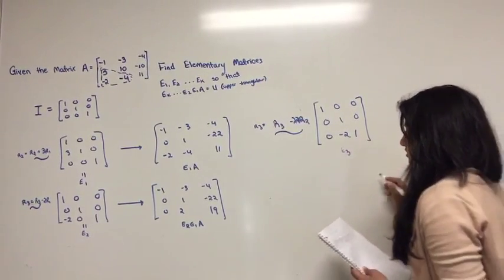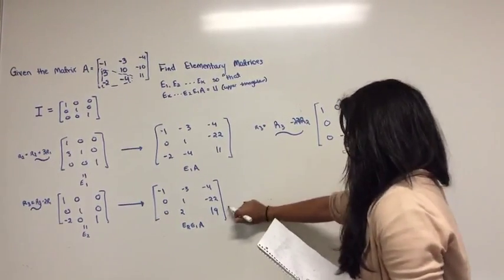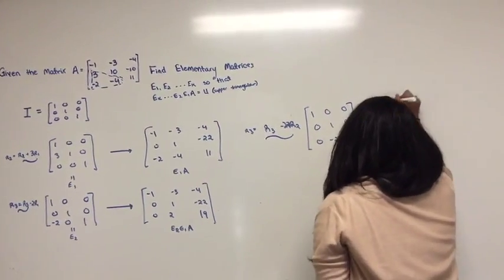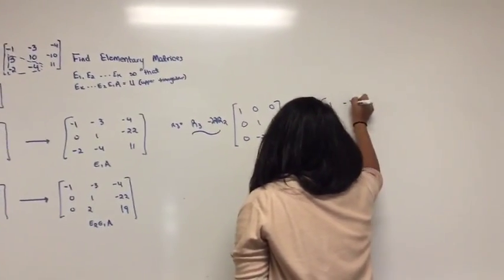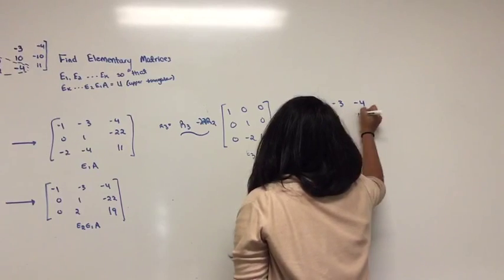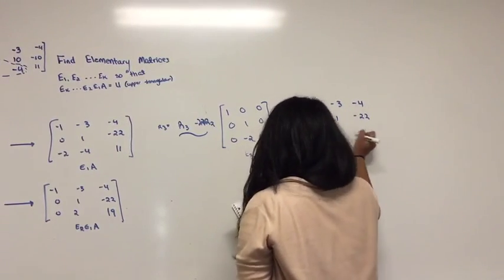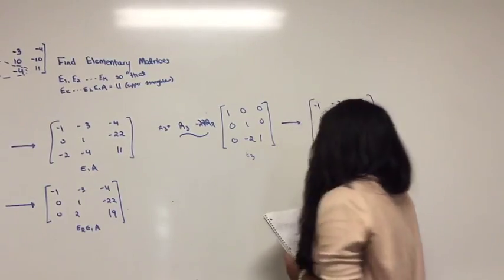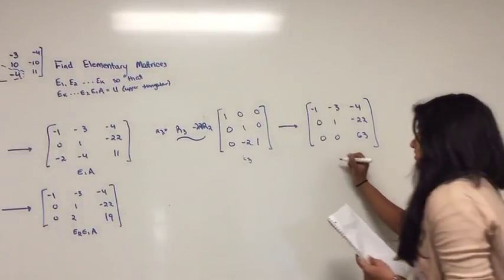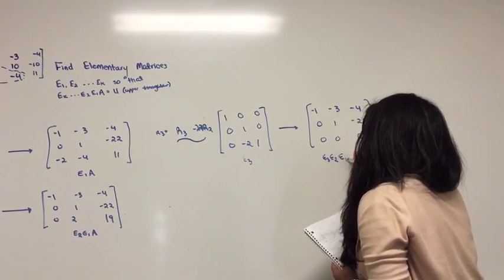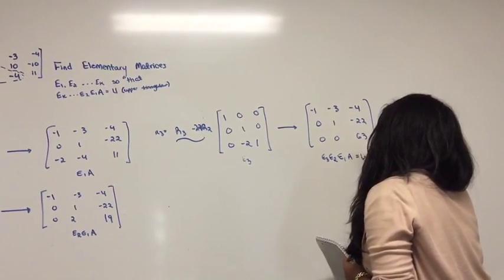And then now you're going to multiply this times this to get your new matrix. And you get the matrix negative 1, negative 3, negative 4, 0, 1, negative 22, 0, 0, 63. And what this matrix right here represents is E3, E2, E1, times A, which is also U, which is your upper triangular matrix.